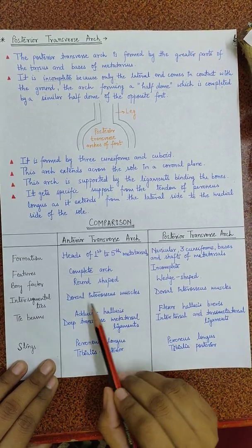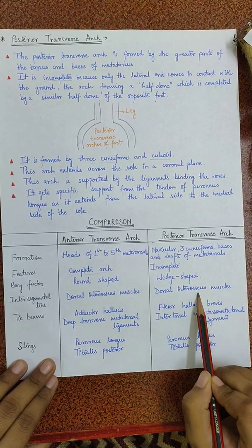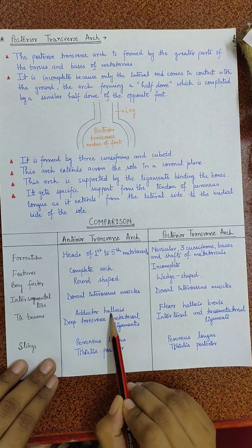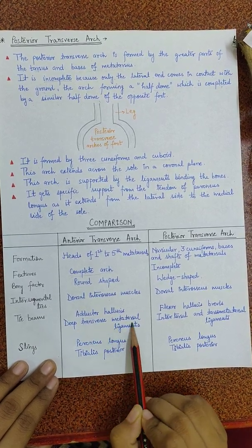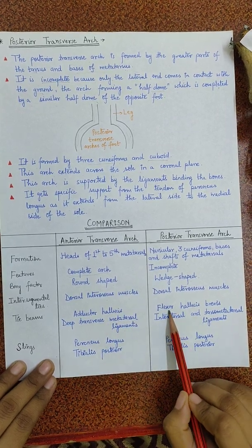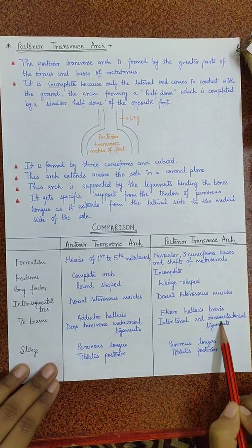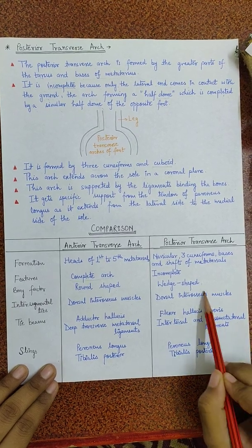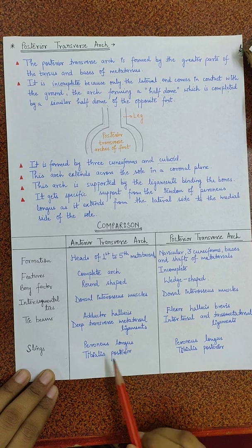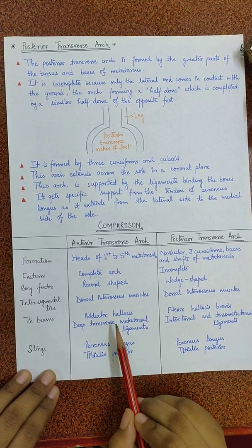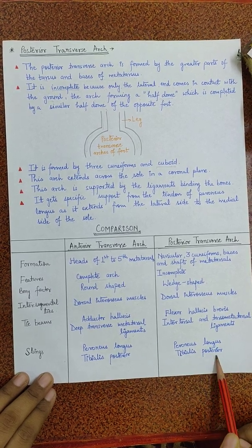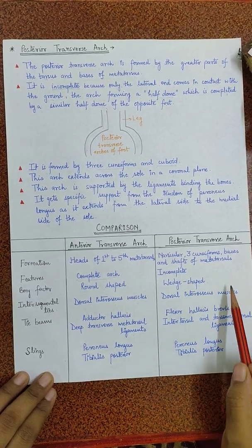Interosseous ties: dorsal interosseous muscles in both the arches. Tie beams: adductor hallucis and deep transverse metatarsal ligaments for the anterior transverse arch and flexor hallucis brevis and the intertarsal and tarsometatarsal ligaments for the posterior transverse arch. Slings: peroneus longus and tibialis posterior for anterior transverse arch and peroneus longus and tibialis posterior again for the posterior transverse arch.